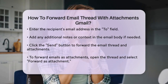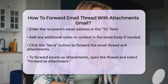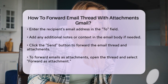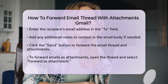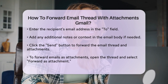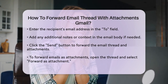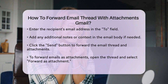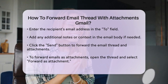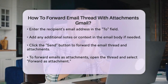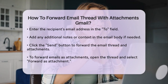Forwarding as Attachments: If you want to preserve all the original headers and metadata of the emails, you might want to forward them as attachments instead. To do this, open the email thread, click on the forward arrow icon at the top, and select Forward as Attachment from the drop-down menu. This will attach the entire email thread as individual emails within the new compose window.